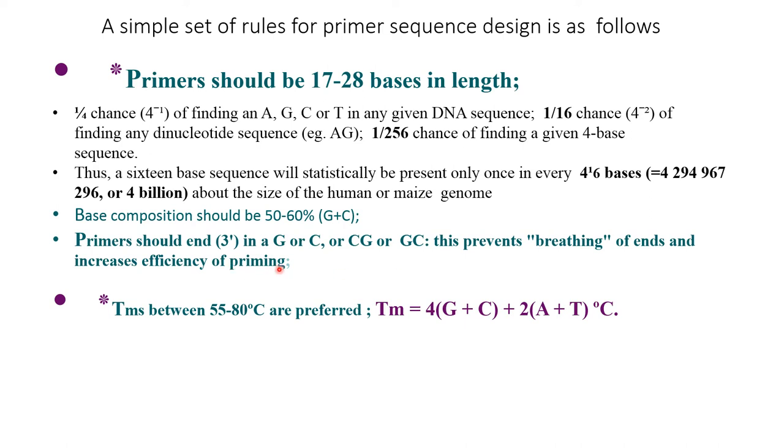Tm between 55 to 80 degrees centigrade is preferred, and the formula should be: Tm equals 4 times G plus C plus 2 times A plus T degrees centigrade.